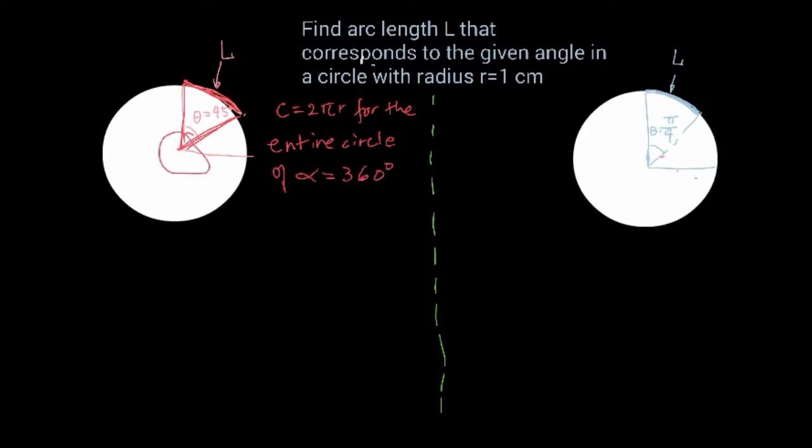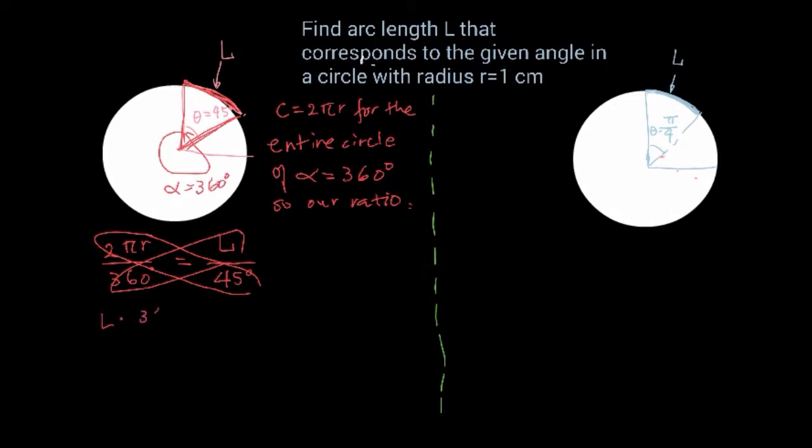Since circumference for the entire circle corresponds to 360 degrees, we can set our ratio that 2πr corresponds to 360 degrees. What is L if I only have 45 degrees? Cross-multiply, and I have an easy equation to solve: L times 360 equals 45 times 2πr.